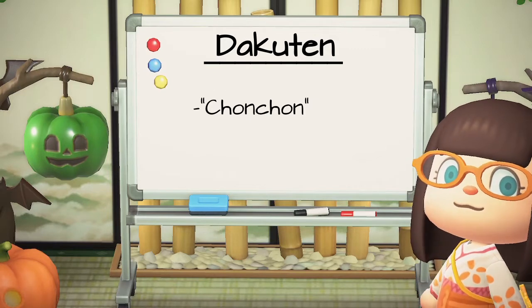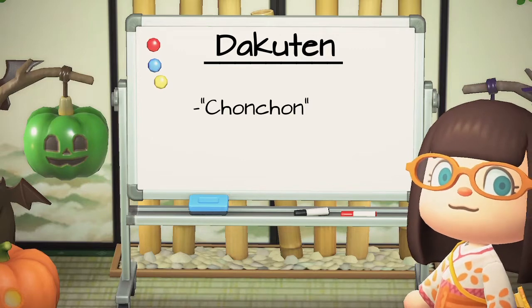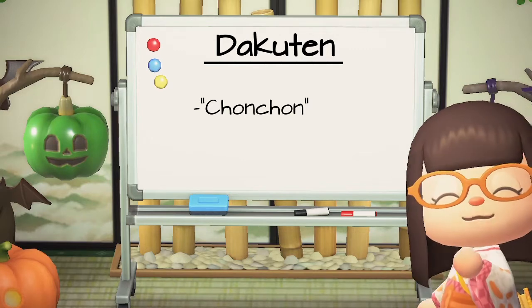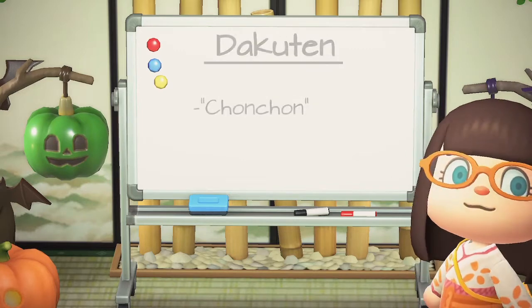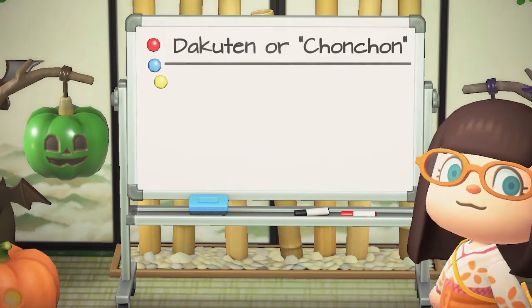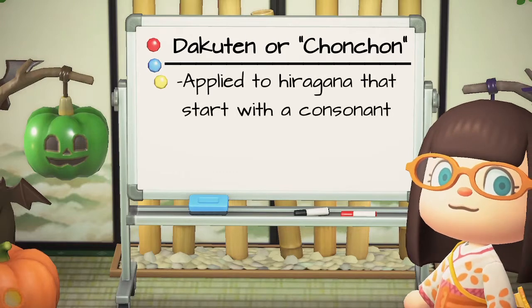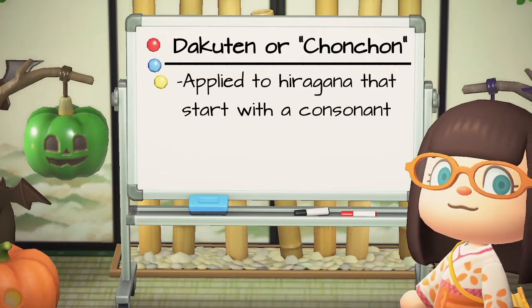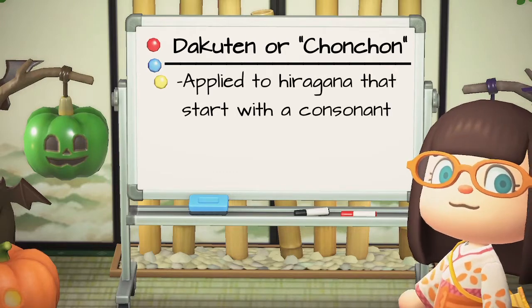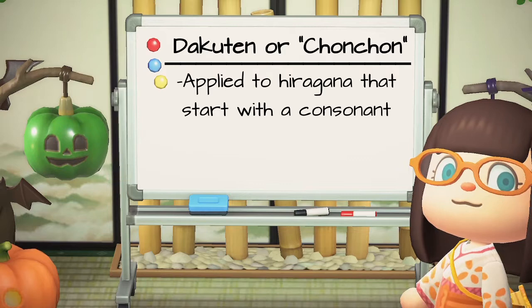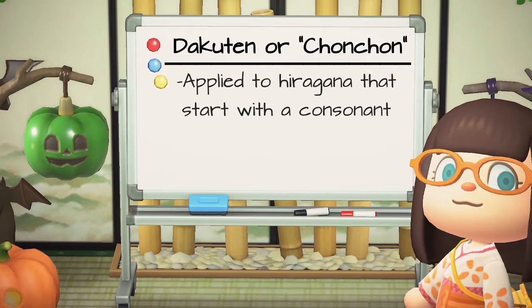Just know that the dakuten, the chonchon, and the tenten are all the same thing. It is generally applied to the hiragana that starts with consonants. Just a little note — consonants are alphabets that are not vowels.